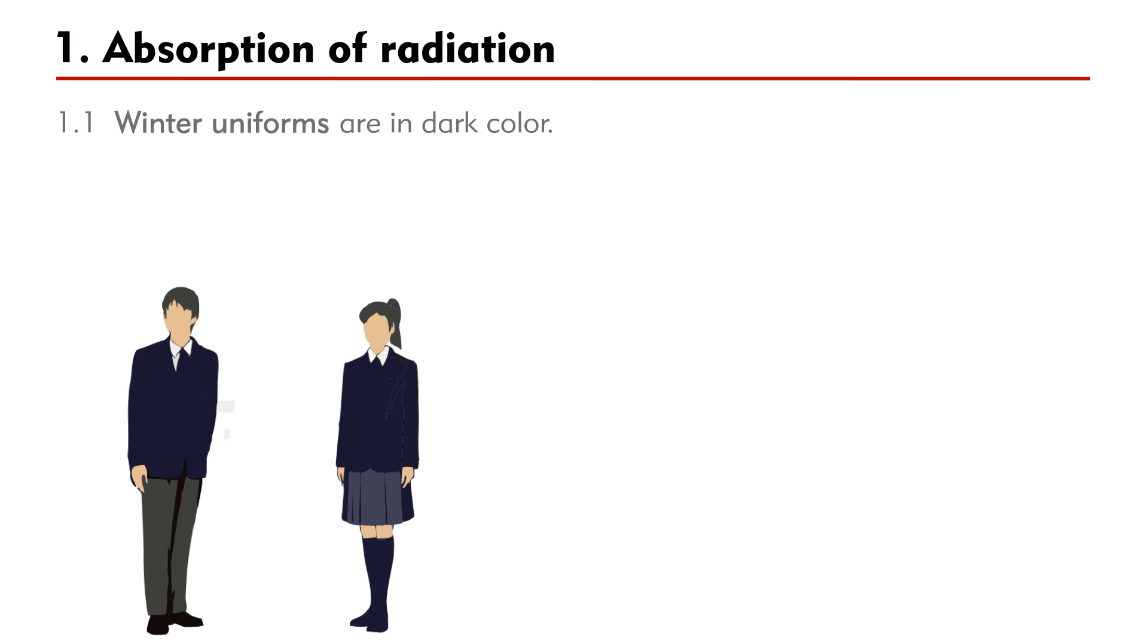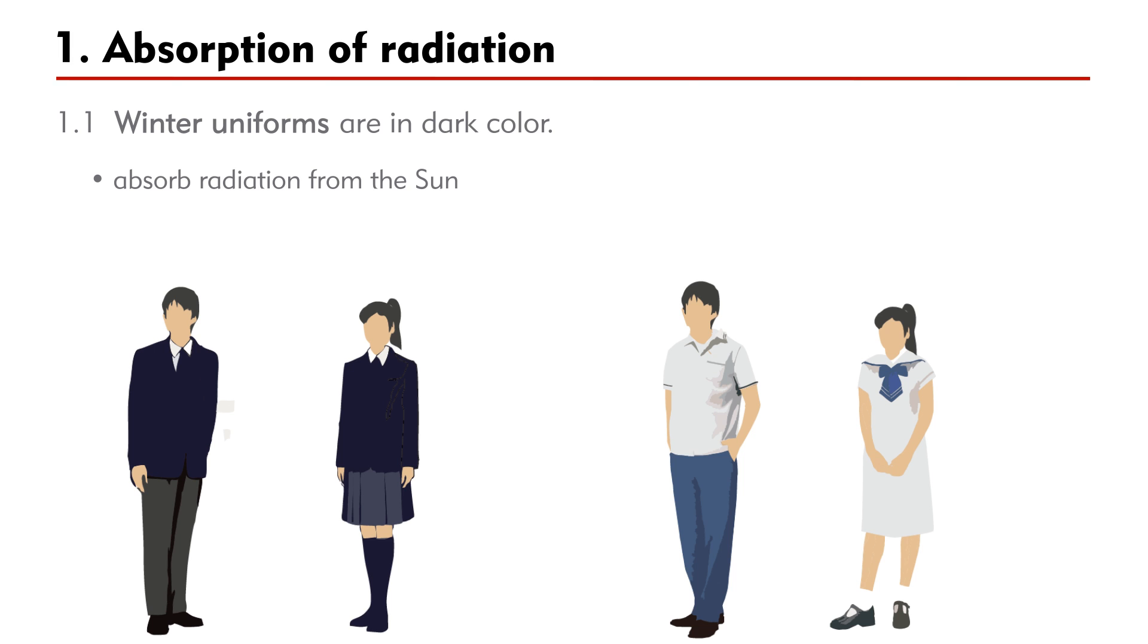The result has important implications. For example, firstly, winter uniforms are in dark color. This helps to absorb radiation from the sun. On the other hand, summer uniforms are in light color. This helps to reflect radiation from the sun.